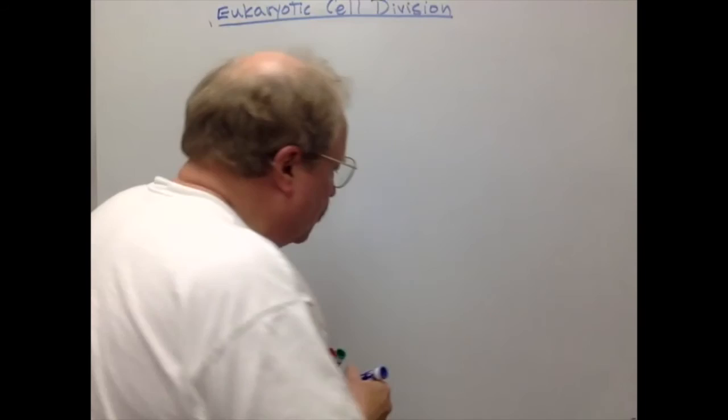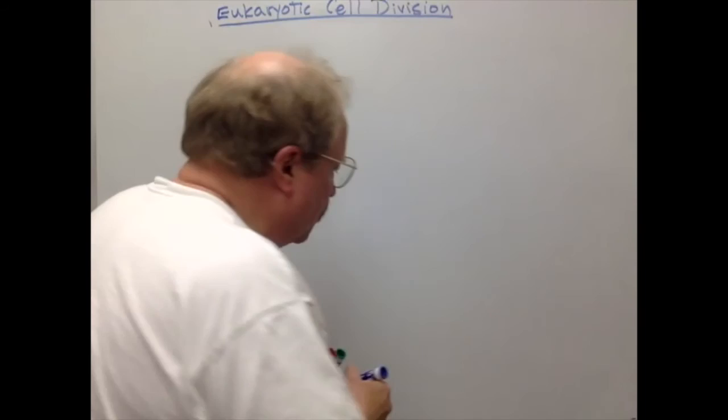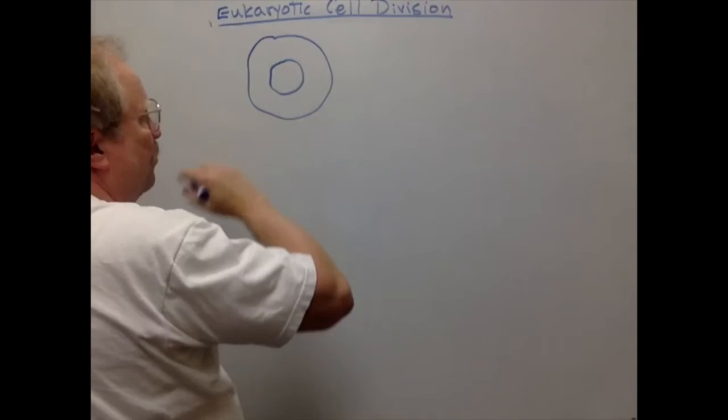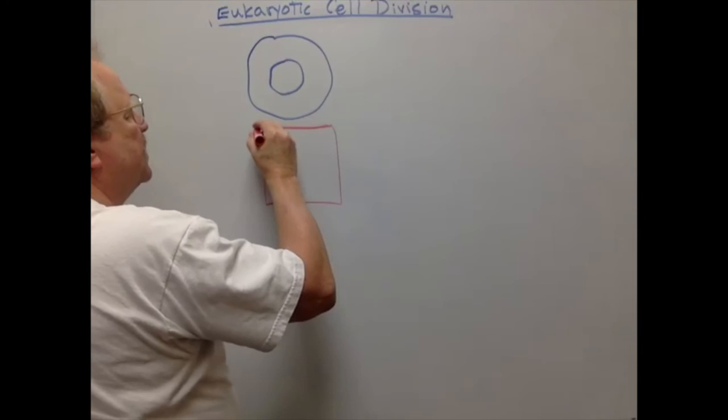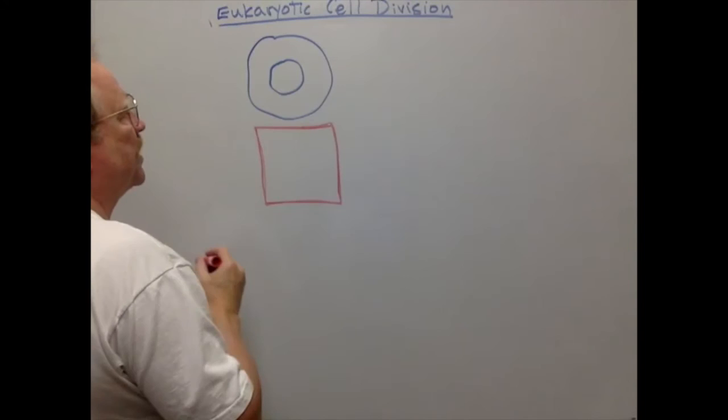The typical animal cell has a cell membrane and a nucleus, as does the typical plant cell. But there are some unique things about the typical plant cell: it has a cell wall composed of cellulose and some other complex polysaccharides.